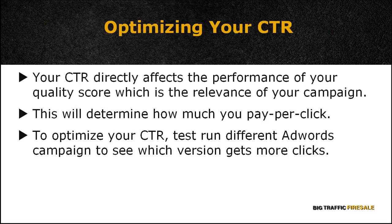Number two: optimizing your click-through rate. Your CTR directly affects the performance of your quality score, which is the relevance of your campaign. This will then determine how much you pay per click. The higher the quality score, the lower you pay per click. Therefore, to optimize your CTR, test run different AdWords campaigns to see which version gets the most clicks.